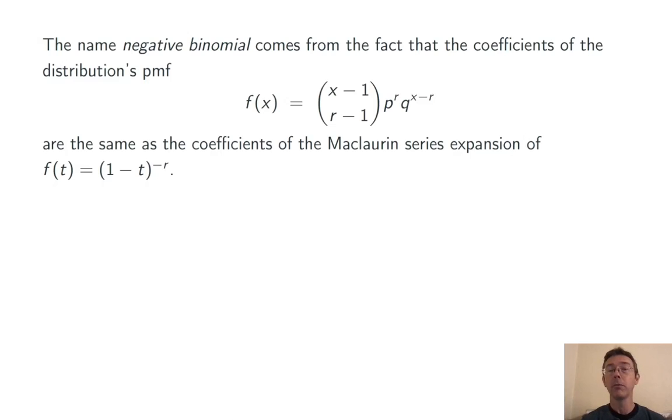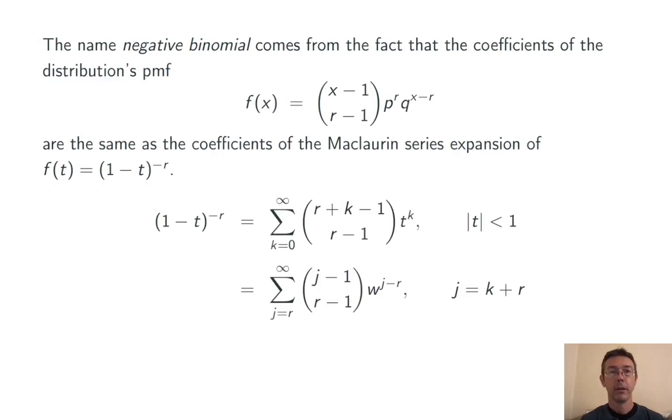The name negative binomial comes from the fact that the coefficients of this PMF, (x-1) choose (r-1) times p to the r times q to the x minus r, are the same as the coefficients of the McLaurin series expansion of (1-t) to the negative r, at least when appropriately arranged. Here's that McLaurin series. It converges for absolute value of t less than 1. Reindexing so that the series starts at r rather than 0, we get (j-1) choose (r-1) times w to the j minus r. So you see it looks a lot like that PMF for the negative binomial distribution.